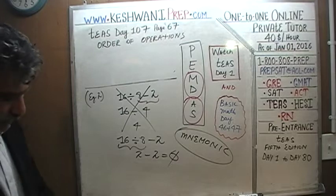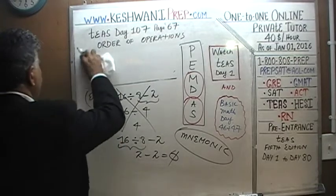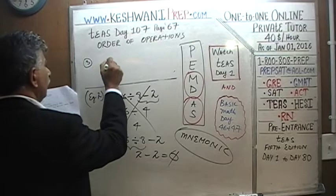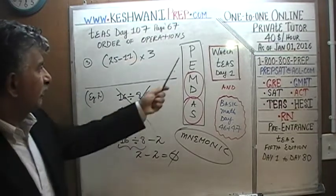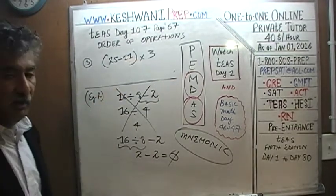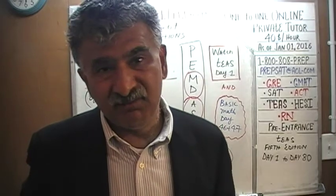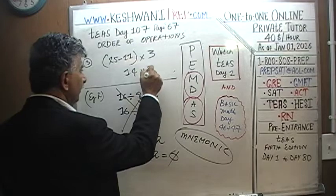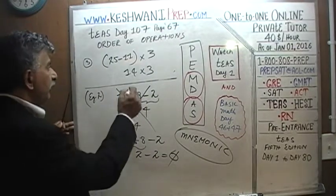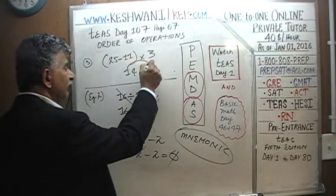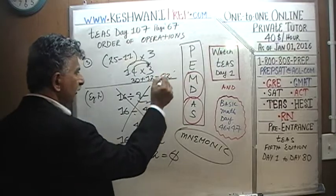Number three: 25 minus 11 in parentheses, times three. It's straightforward because parentheses come first. We do 25 minus 11 first. We know 25 minus 10 is 15, so 25 minus 11 must be one less — that's 14. Then 14 times 3: we know 10 times 3 is 30, and 4 times 3 is 12, so the answer is 42.